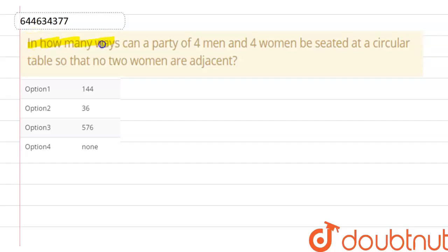It is given that in how many ways can a party of four men and four women be seated at a circular table so that no two women are adjacent? So no two women are adjacent is only one case when they are sitting alternately.